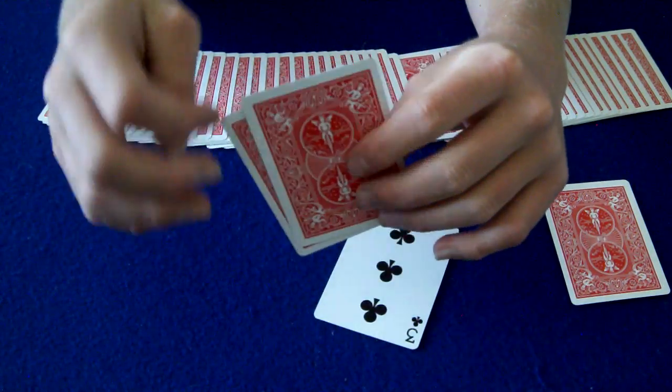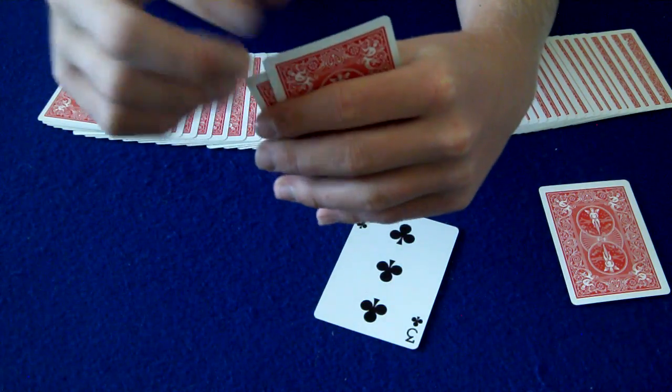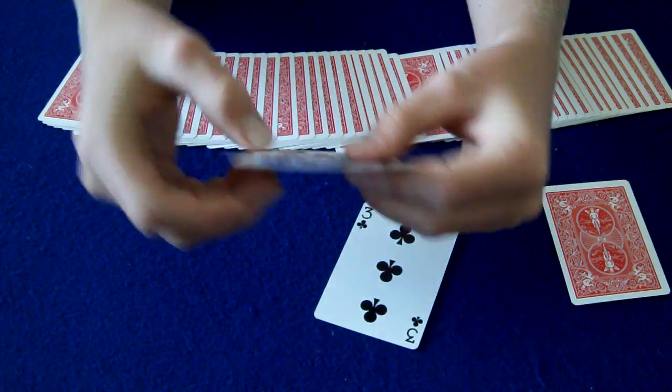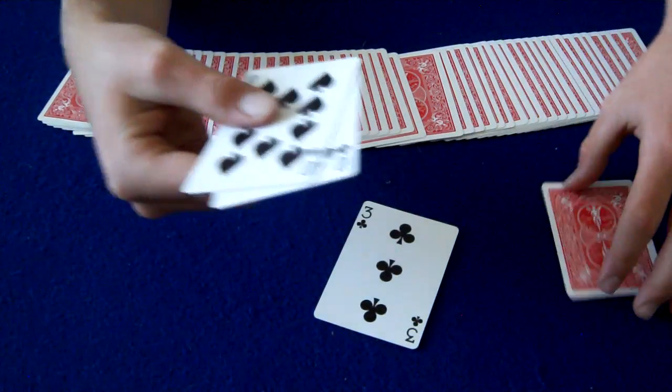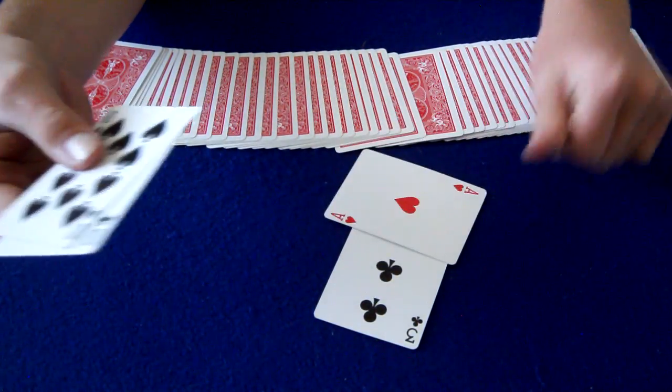So what was the first selection? The Ace of Hearts, right? So that's weird. These are the two black tens, these are the two black tens, and this must mean this is the Ace of Hearts.